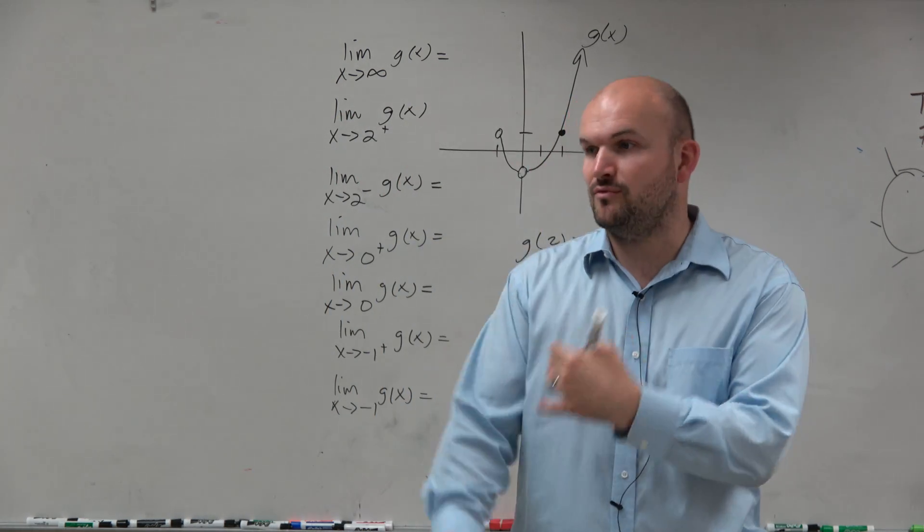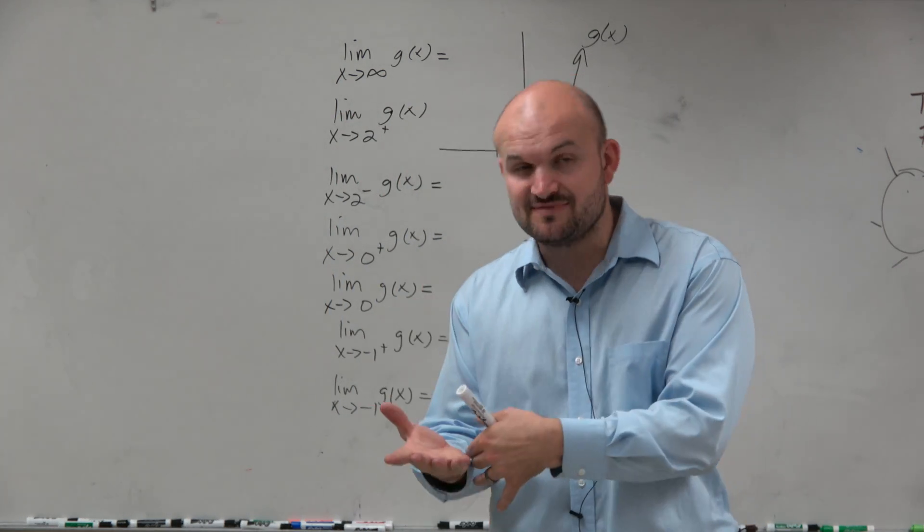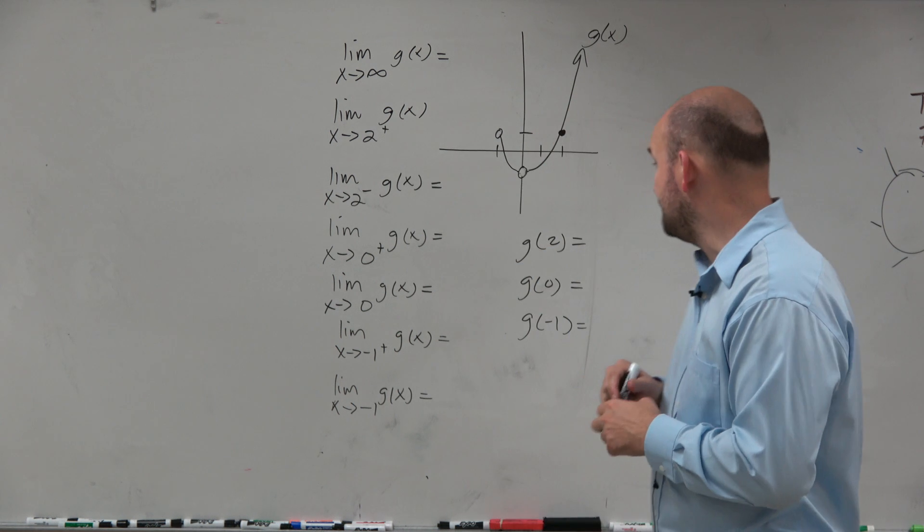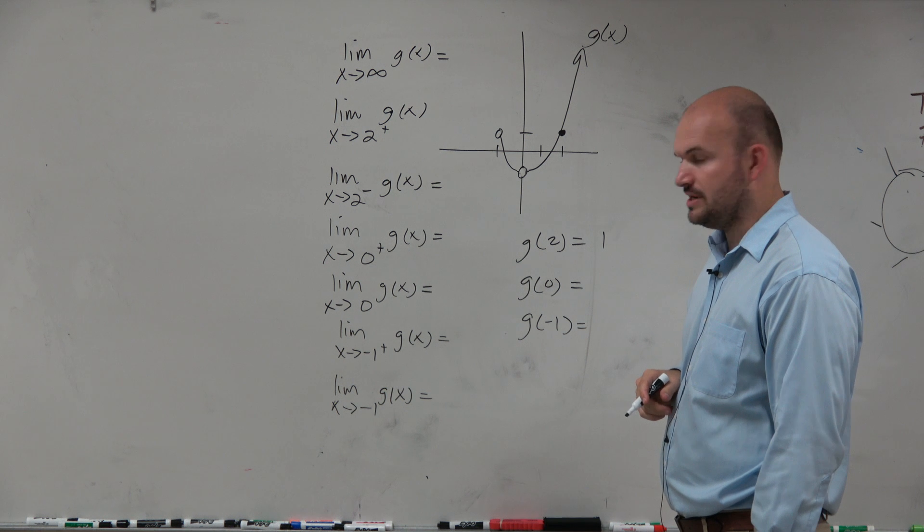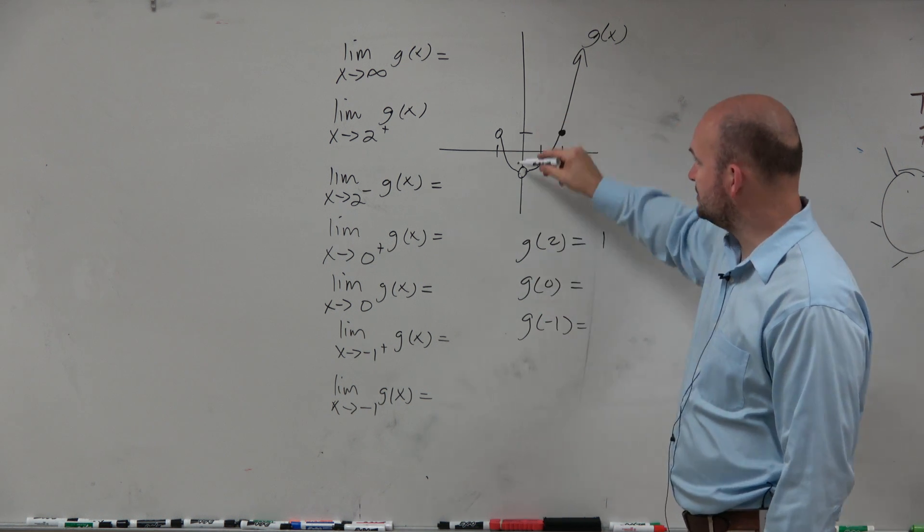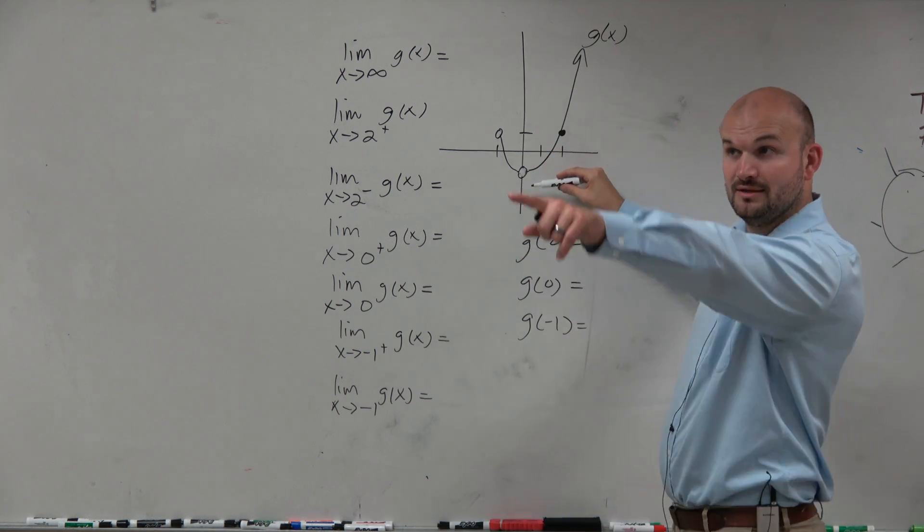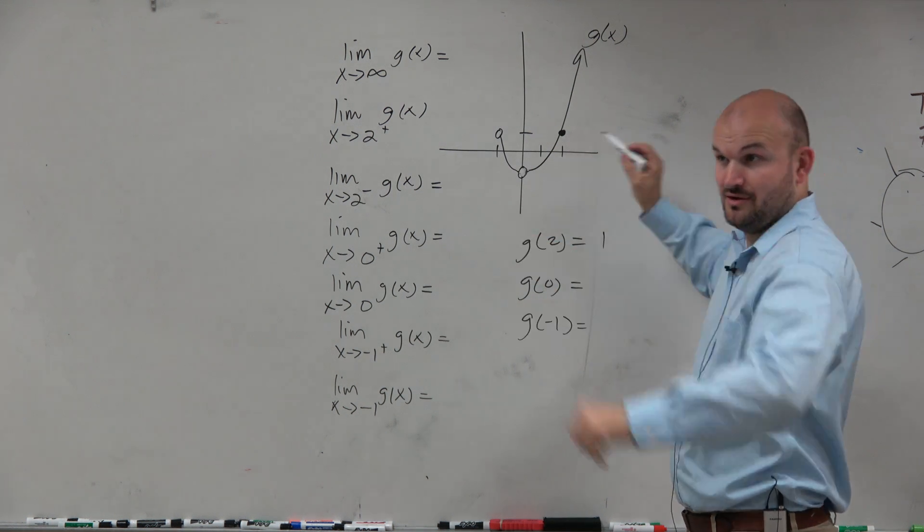Remember what g of whatever value is - that's what your x value is, and then we're looking basically for the y value. So g(2), if we go over to 2, you can see that the output there is 1, right? g(0), if we go to 0, we see we have a hole, right? That is a removable discontinuity, correct?